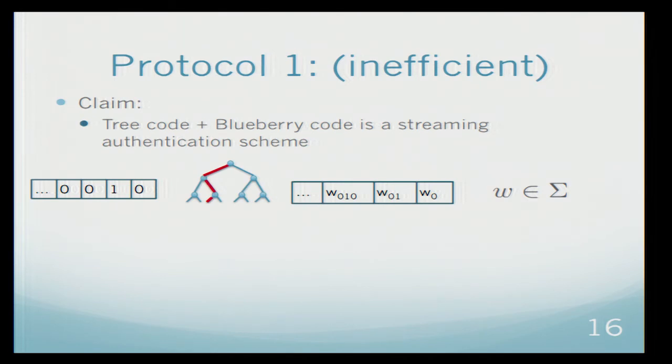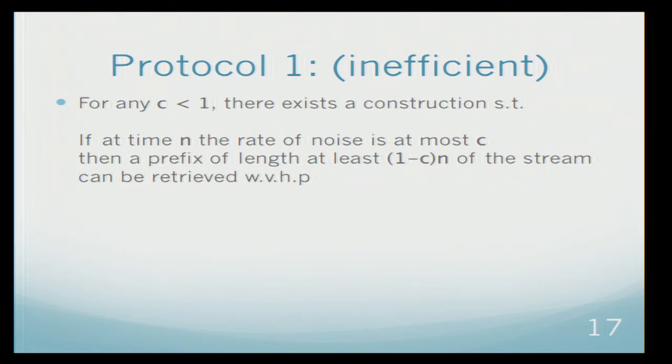And then she will use the blueberry code to map each label into a larger alphabet. And as long as the noise is less than c for any time n, we will be able to recover at least 1 minus c fraction of the stream.